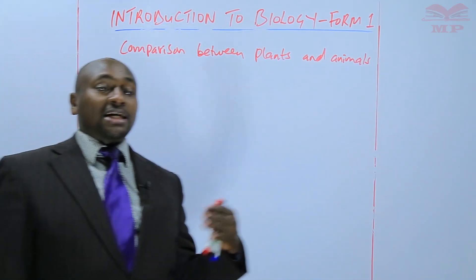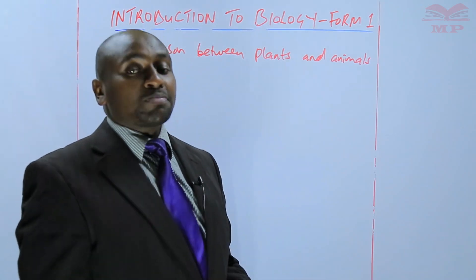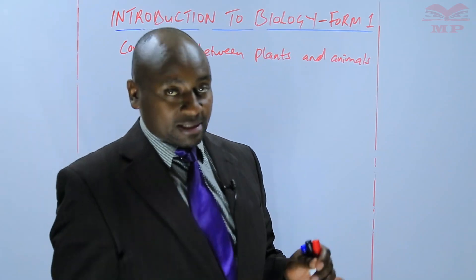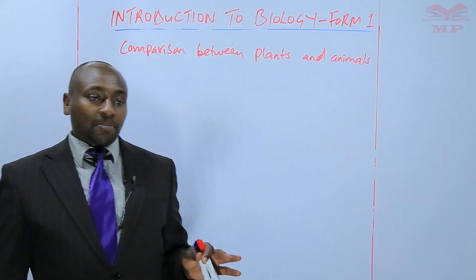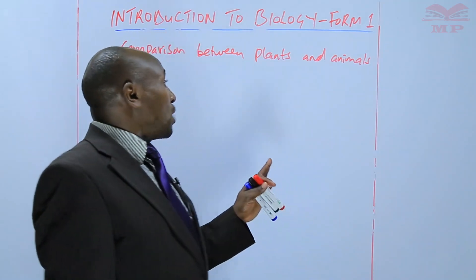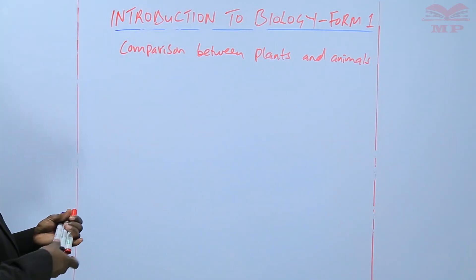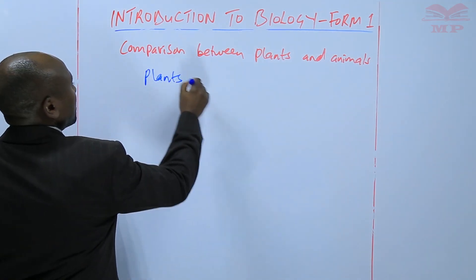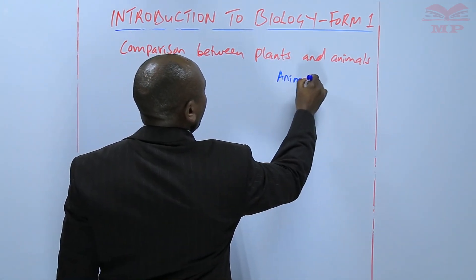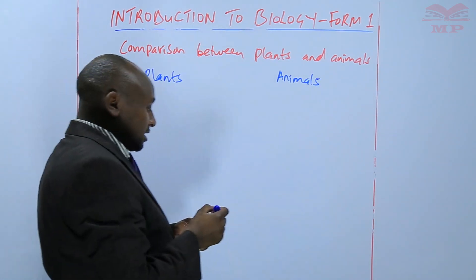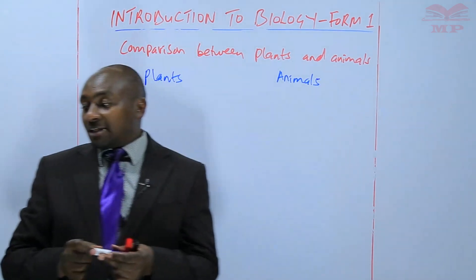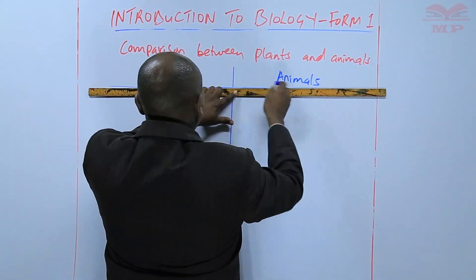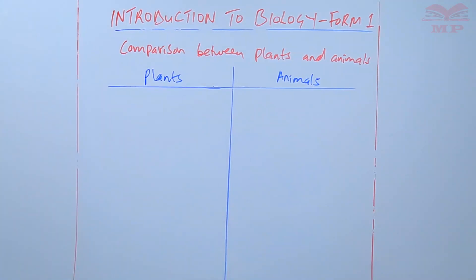We also covered the precautions that one needs to take, especially when collecting injurious specimens — those are specimens that can cause injuries. Now I want us to do a comparison between plants and animals, and we will present this in the form of a table.